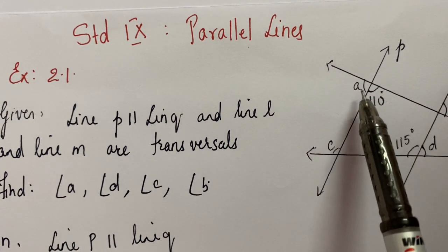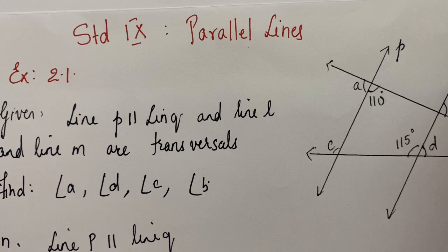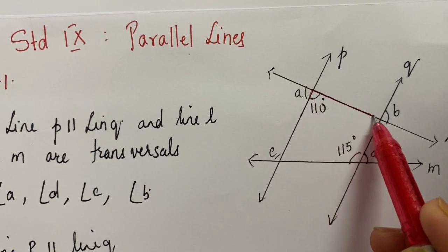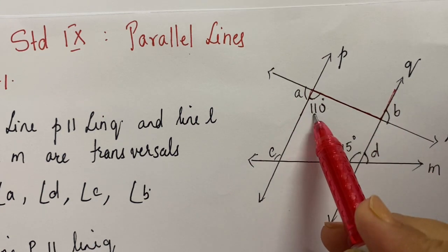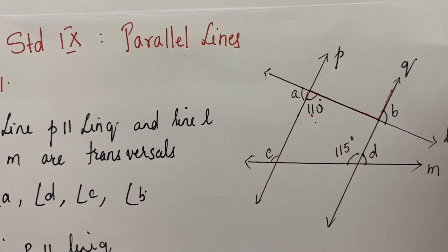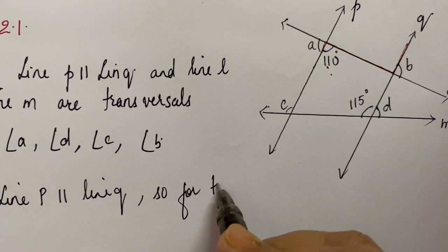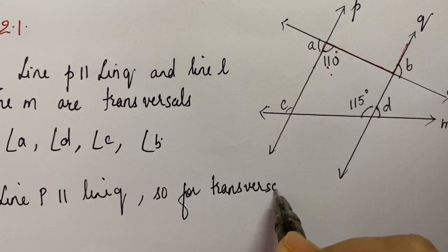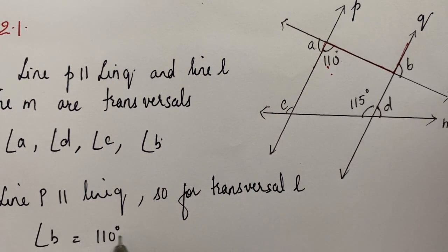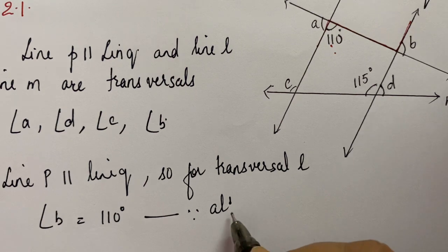Now for transversal L, we have the alternate angles congruent. See this pair of alternate angles. Angle B will be of 110 degrees. So for transversal L, angle B is equal to 110 degrees, since they are alternate angles.